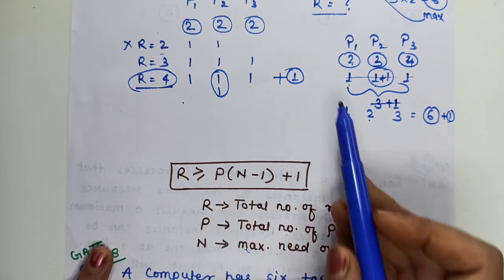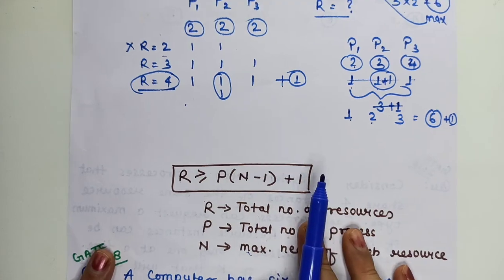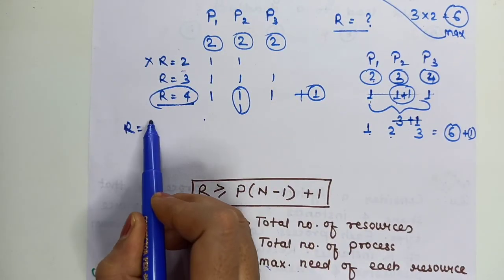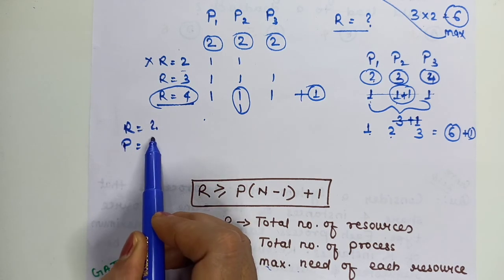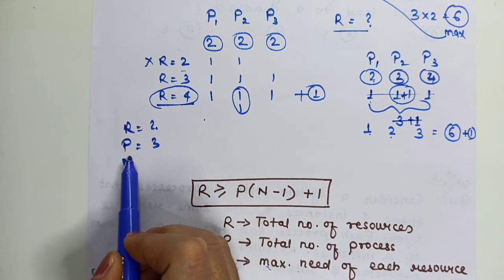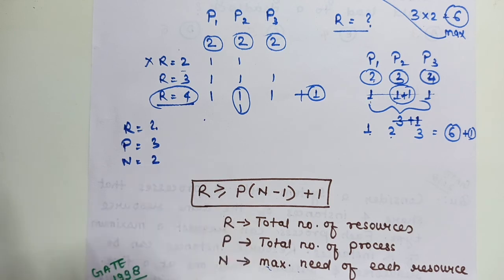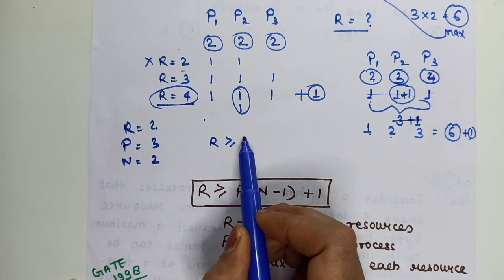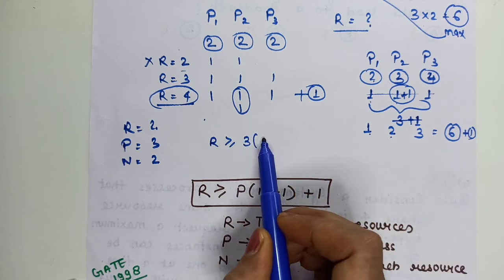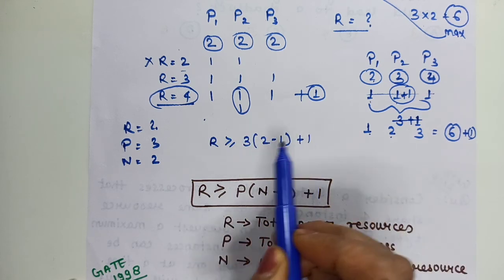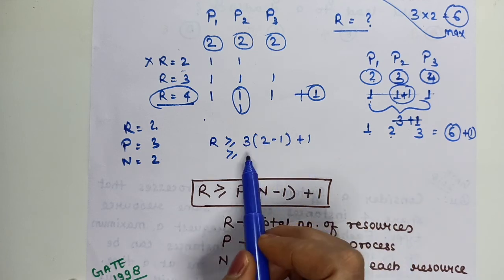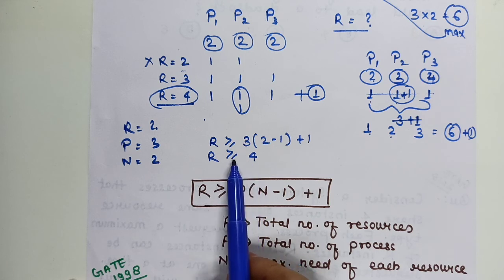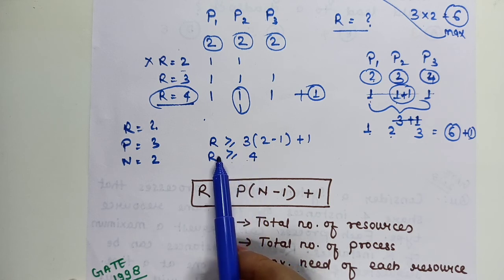Applying this formula to the 3-process, 2-unit question: R ≥ P*(n-1)+1 = 3*(2-1)+1 = 3*1+1 = 4. So R must be at least 4. This matches what we found earlier. The minimum number of instances is 4, and R can be 4 or greater. Previously when we tried 2 instances, the formula also gave 4 as the minimum — consistent.